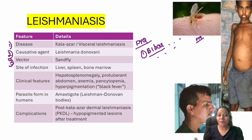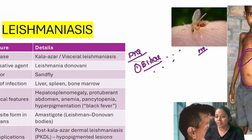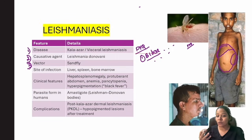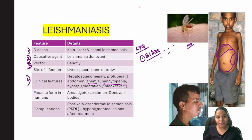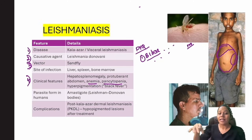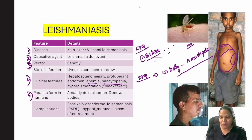Clinical features include hepatosplenomegaly with a protuberant abdomen, and darker skin pigmentation — that's why it's called black fever or kala-azar. Because the spleen enlarges, the blood count drops, causing anemia and pancytopenia. The parasite form in humans is the LD body — the amastigote — because it is intracellular. This is the third frequently asked PYQ.